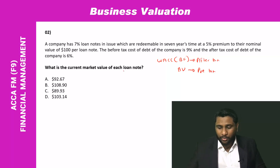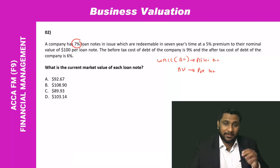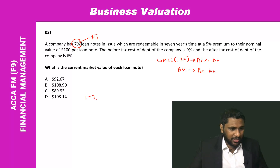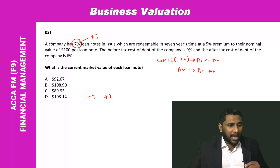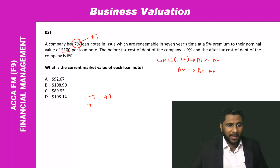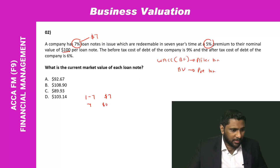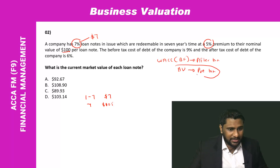The person who holds this loan note gets 7%, meaning they receive £7 every year from year 1 to year 7. At redemption after 7 years, they receive £100 plus the 5% premium, so £105 in total. Since this is a security valuation, we use the pre-tax rate of 9%.